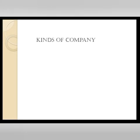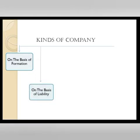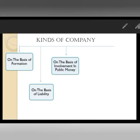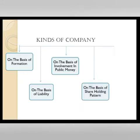Kinds of Companies: 1. On the basis of formation. 2. On the basis of liability. 3. On the basis of involvement of public money. 4. On the basis of shareholding burden. 5. Other companies.